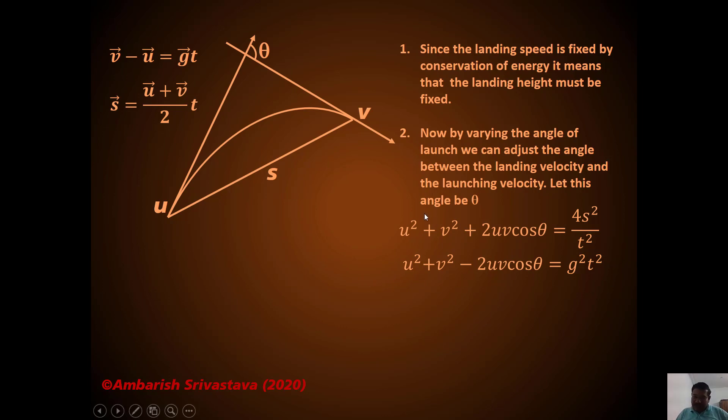So you think of multiplying these two equations. So what do you get? A plus B into A minus B on the left hand side. So what do you get by multiplying? This is what you get. So (U² + V²)² - 4U²V² cos² θ = 4S²G².